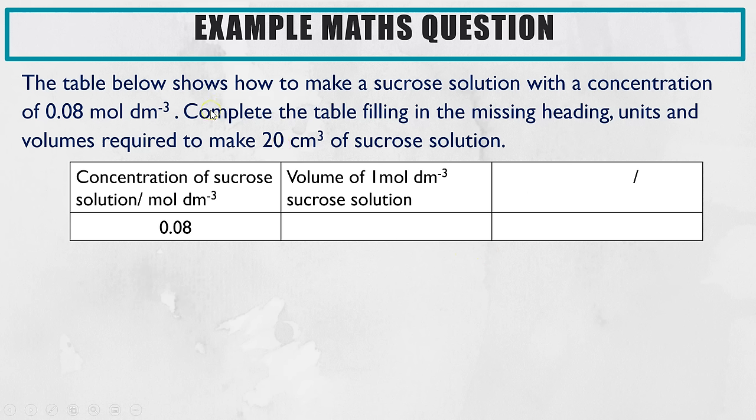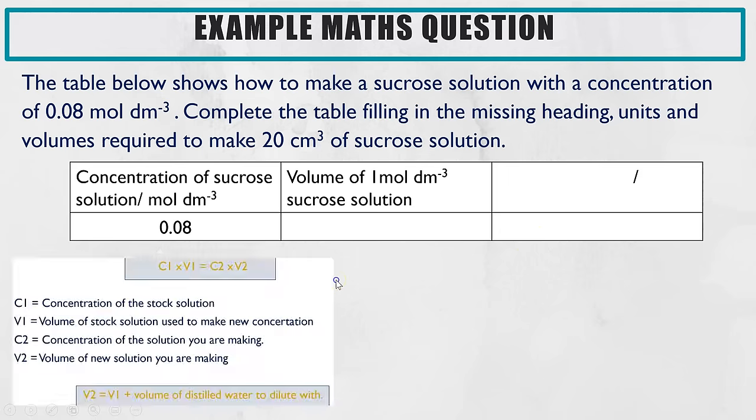So in this question the table below shows how to make sucrose solution with the concentration of 0.08 moles per decimetre cubed. So you have to complete the table filling in the missing heading which will go here, the units which will be here, and then these two volumes at the bottom. So first of all let's put this here as our reminder those two formulas to use. And the first thing you should do on these questions is highlight all of the numerical values you've been given and look carefully because often you'll have some of the numerical values that you need to use actually within the table even within the header here.